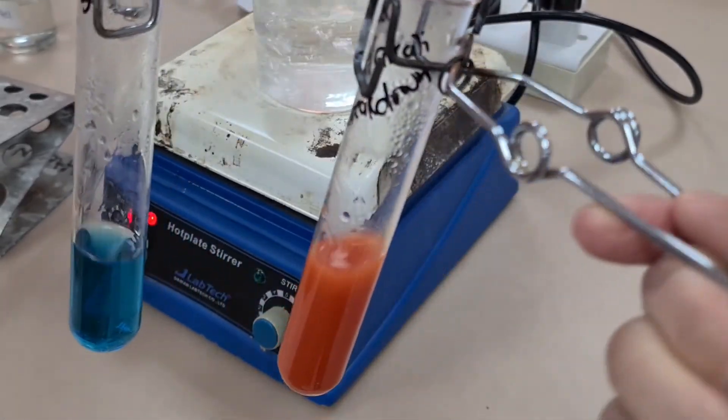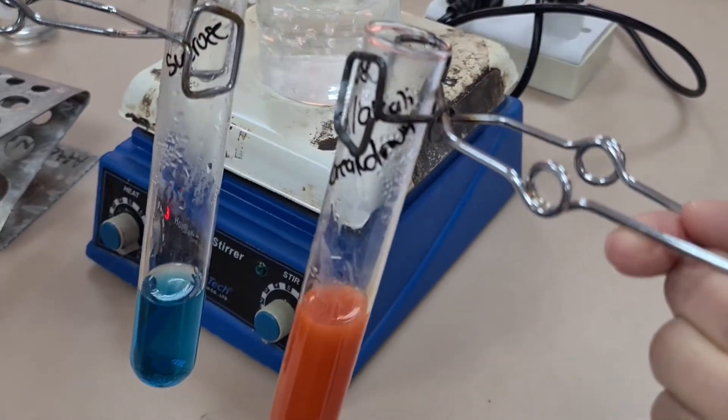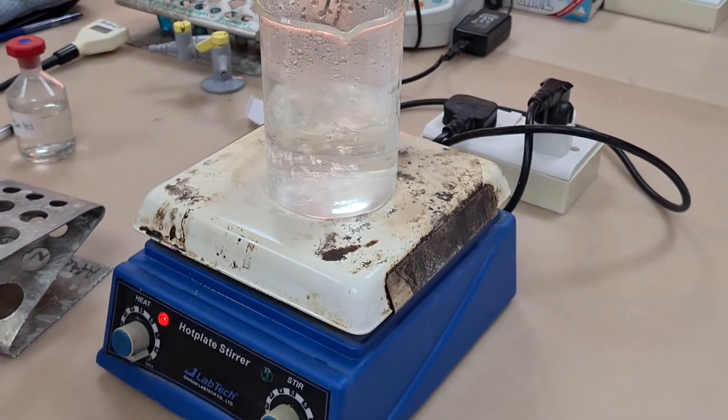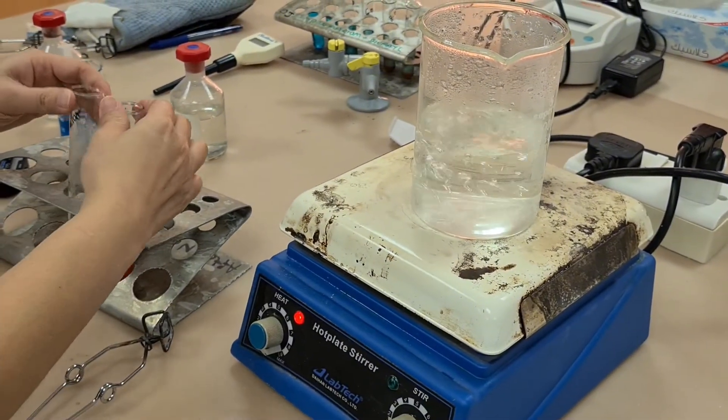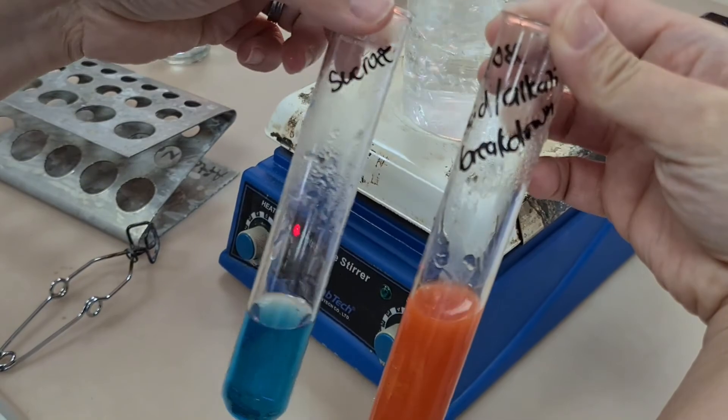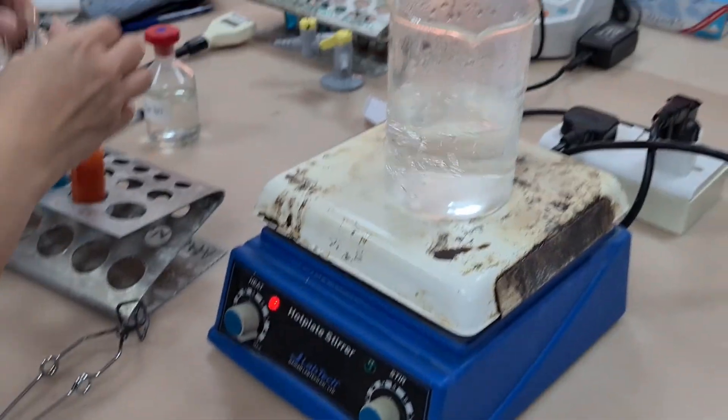So to test for disaccharide, we have to prove first of all that we get a negative test, then we have to break it down into monosaccharides, test again with Benedict's reagent, and get a positive test.